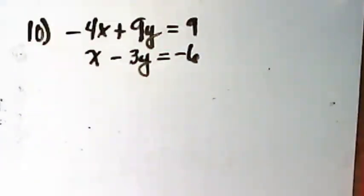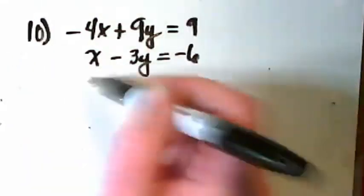I like to look for the easiest way. And I think here the easiest way is to turn that negative 3y into a negative 9y. I could also turn that x into a positive 4x. Either one of those is going to let me eliminate a term from this second one here.